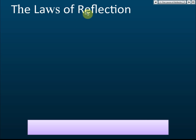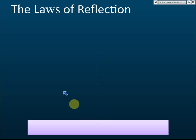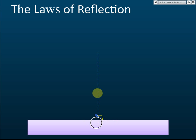Let's continue with the laws of reflection. Before we learn the laws of reflection, you need to know some important terms. Let's say this is a mirror, and we have a light ray that hits a point on the mirror — this is called the point of reflection. If we draw a line perpendicular to the mirror at 90 degrees at right angles, this line is called the normal.